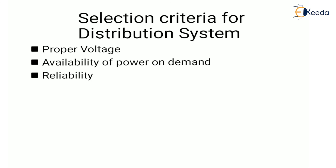Next is the selection criteria for a distribution system. The first criterion is proper voltage — a distribution system should ensure that the voltage variations at the consumer terminal are within permissible limits. The statutory limit of voltage variation is plus or minus 5% of the rated value at the consumer's terminal.